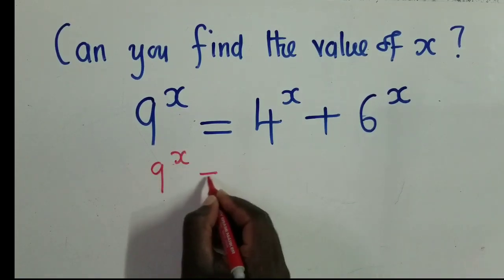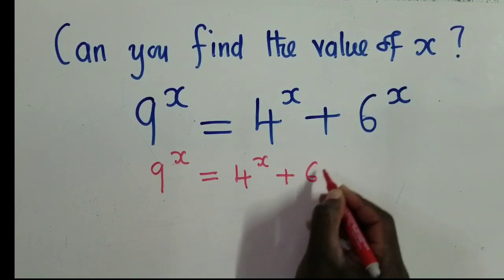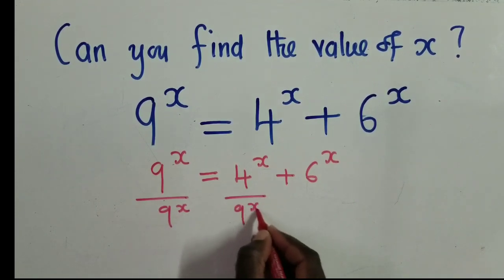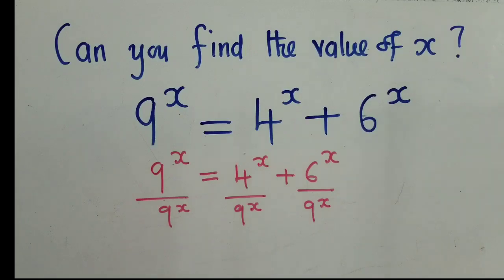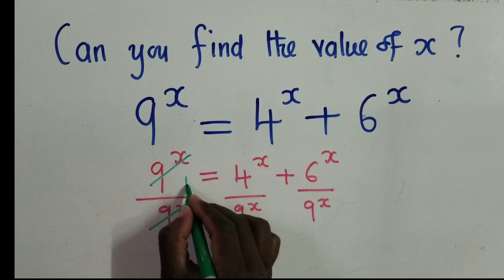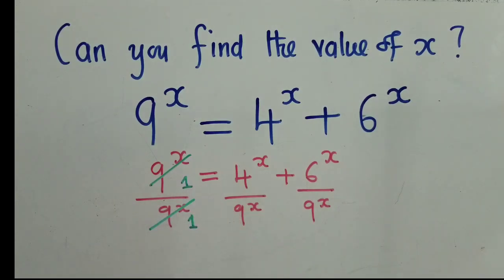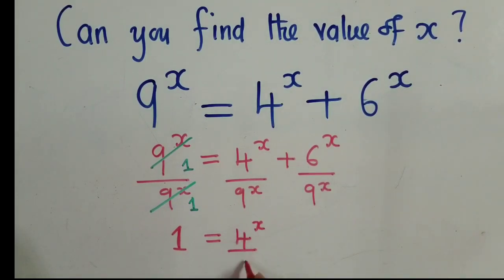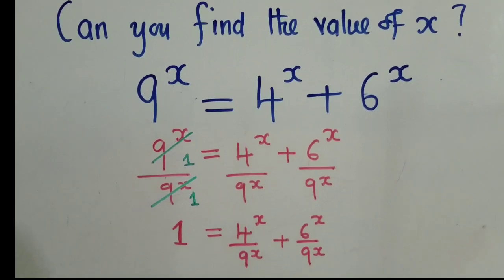To find the value of x, we copy what we've been given — that's step one. Step two: we divide throughout by 9 to the power x. I've decided to divide by 9^x because I want to remain with 1 on this side. When I divide 9^x by 9^x it gives me 1, so I remain with 1 here, which equals 4^x over 9^x plus 6^x over 9^x.